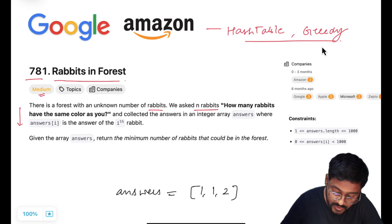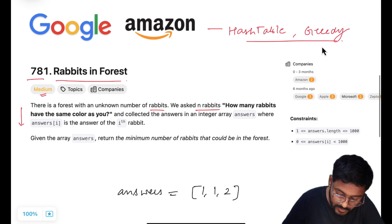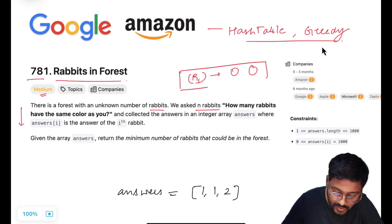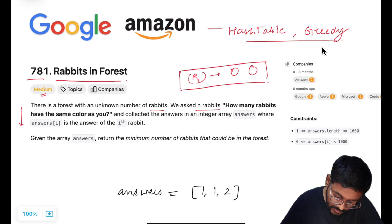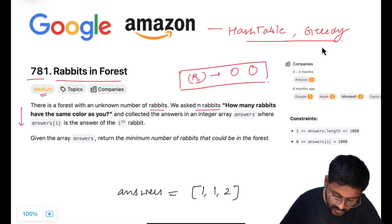This query was asked to n rabbits: how many rabbits have the same color as you? Let's say we are asking any rabbit and he says there are two rabbits. It means in total we are having three rabbits with the same color. n collected the answers in an integer array `answers`, where `answers[i]` is the answer of the i-th rabbit.